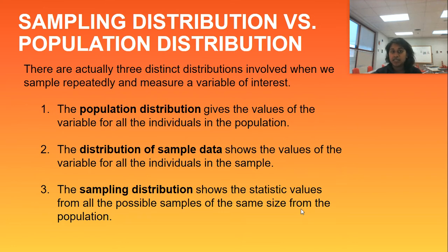There are actually three distinct distributions involved when we sample repeatedly and measure a variable of interest. The first could be a population distribution, which gives the values of the variables for all the individuals in a population.